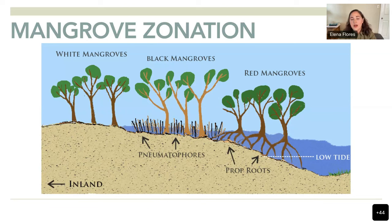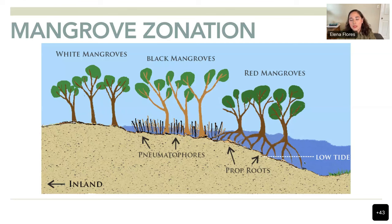Black mangroves are usually found dealing with high tides and then very low tides with no water at all. If you've walked through a black mangrove stand, you can see they most of the time have stinky water. Compared to the red mangroves, they have long roots that help them stick out and breathe because they are usually inundated.